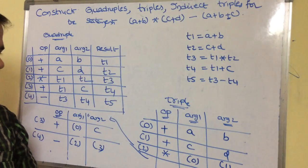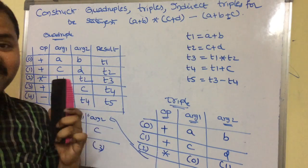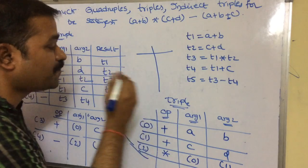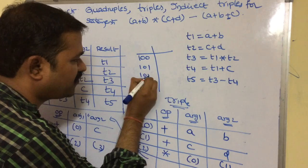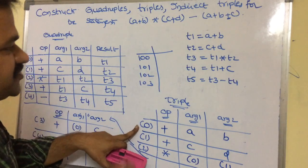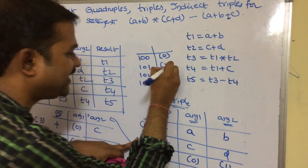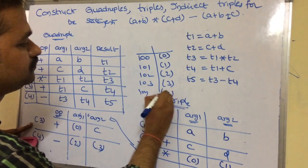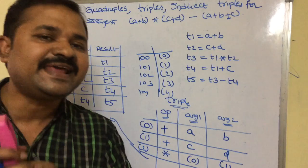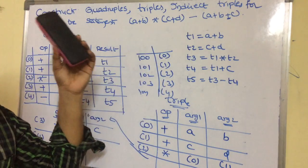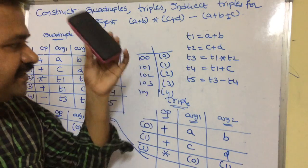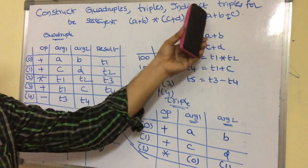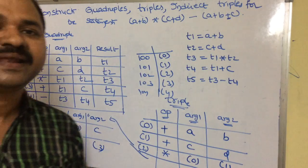The last representation is indirect triples. Indirect triple is similar to triple, but we create one additional table. That table contains two columns with pointers: 100, 101, 102, 103, 104. Where 100 points to triple 0, 101 points to triple 1, 102 points to triple 2, 103 points to triple 3, and 104 points to triple 4. In indirect triples we have two tables: the first table has pointers pointing to triples, and the second table contains the triples themselves.